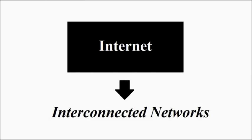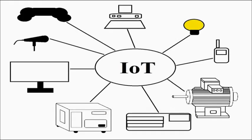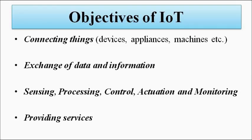The different devices are brought together for the sharing of data and information with each other for monitoring purposes, sensing, detection, actuation, controlling, and so on. The various general objectives of IoT: first and most important is connecting things with each other; exchange of data and information for sensing, actuation, monitoring, control, processing, and analysing of data collected; and providing various services on the basis of these operations.